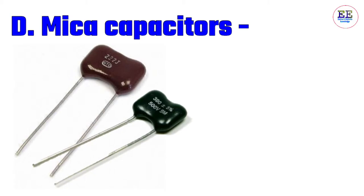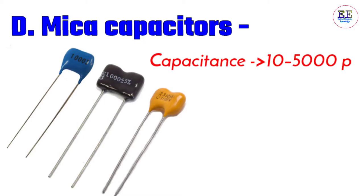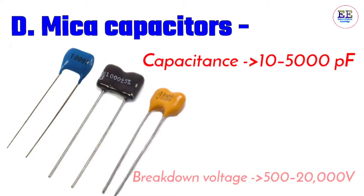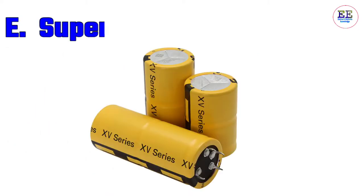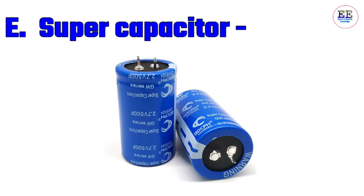D) Mica capacitors: mica sheets serve as the dielectric and are stacked between tinfoil sections for the conducting plates to provide the required capacitance. Their capacitance value is 10 to 5,000 picofarad, and the breakdown voltage is 500 to 20,000 volts. E) Supercapacitors: capacitors which have an electrochemical capacity with high capacitance values compared to other capacitors are known as supercapacitors.